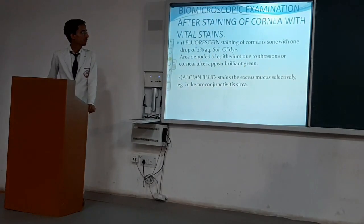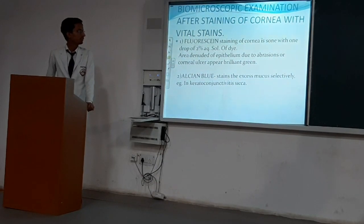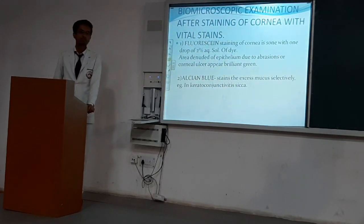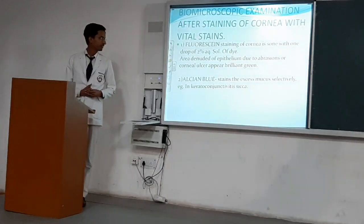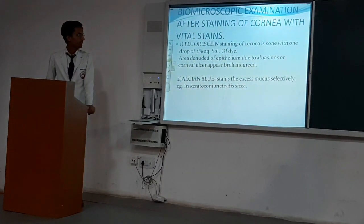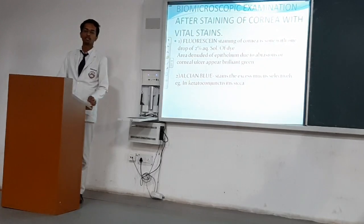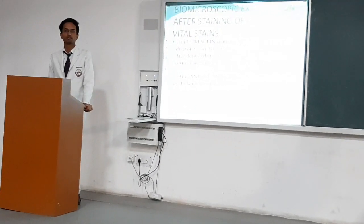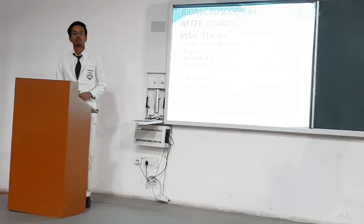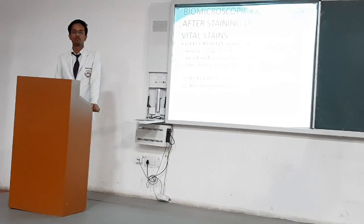Biomicroscopic examination can be done after staining of the cornea with vital stains. The most commonly used stain is fluorescein staining, in which the cornea is stained with one drop of 2% aqueous solution of fluorescein. Areas devoid of epithelium due to an abrasion or corneal ulcer become brilliant green. We can also use alcian blue stain, which stains excess mucus selectively, for example in keratoconjunctivitis sicca. Another stain is rose bengal stain — using 1% solution, dead and devitalized structures stain the cells red. This rose bengal stain is irritant, so before using it, we put 2% xylocaine solution.